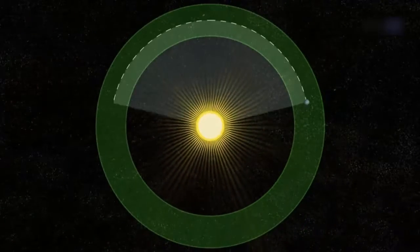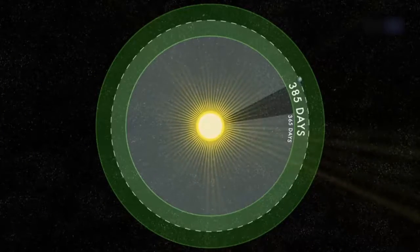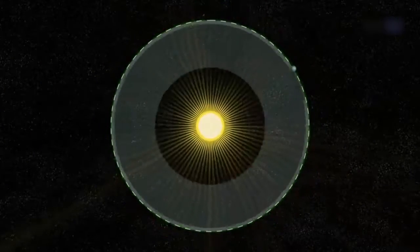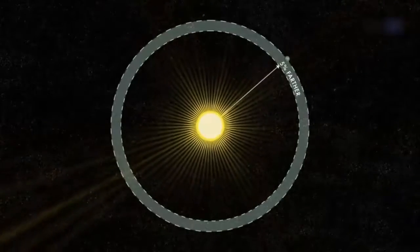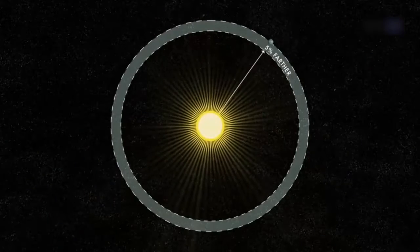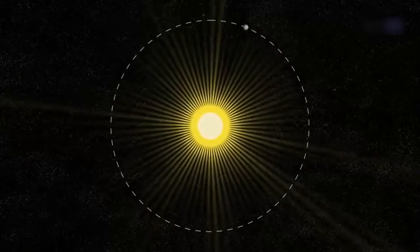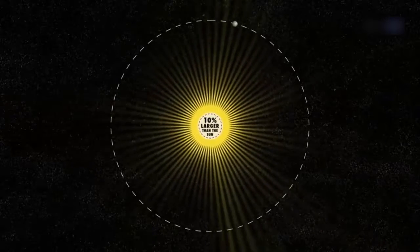A year on Kepler-452b is 385 days long, only a few weeks longer than a year on Earth. The planet is only 5% farther from its parent star than Earth is from the Sun. This extra distance is mitigated by extra sunlight. Kepler-452b's parent star is 20% brighter and has a diameter 10% larger than the Sun.